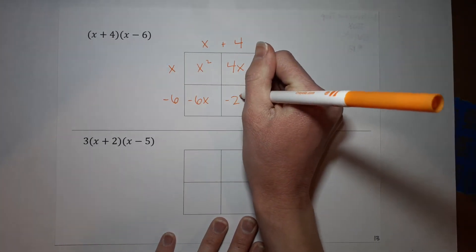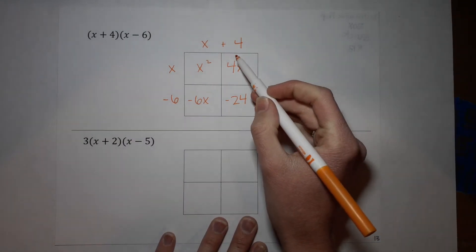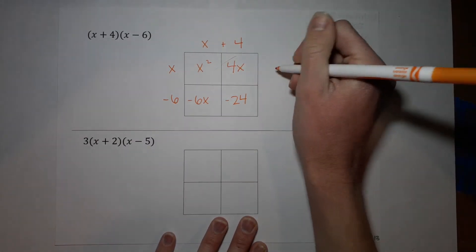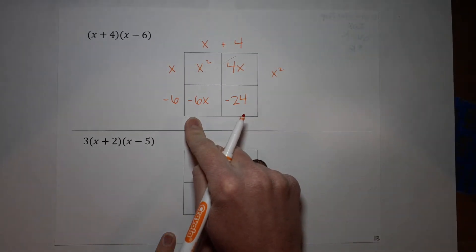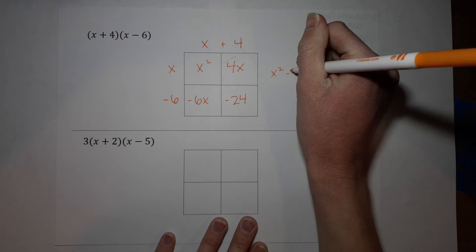Negative six times four gives me negative 24, and then I'm going to write that out. I'm going to combine the like terms, which are those two x's. So I've got x squared, then I've got four x minus six x, which gives me negative two x, and then I've got the negative 24 on the back.